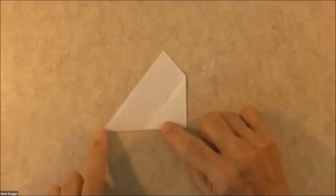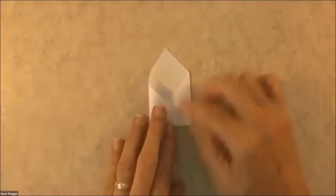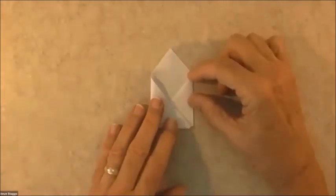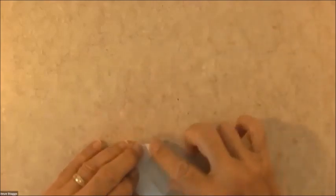Now the next thing I need to do is fold this corner over, and what I want to look for is to make the top here, what I would call the shoulders, even. So I want these two pieces right here, the two shoulders, to be somewhat even.